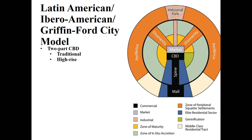One thing that's different from U.S. urban models is that the Latin American model has a two-part central business district. Basically, all the models today are going to have multiple central business districts. Part of the reason for this is because when European colonizers came into any area — whether Latin America, Africa, or Asia — the people living there already would have had something resembling a CBD: the center of town where traditional markets were, where people would come to sell their goods. So at the very center of the Ibero-American Griffin-Ford City model, we've got these two areas, both part of the CBD — a traditional market and a modern central business district with big, tall buildings.